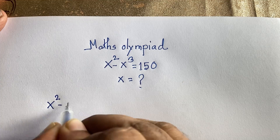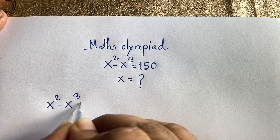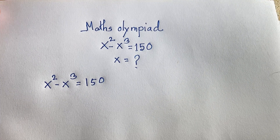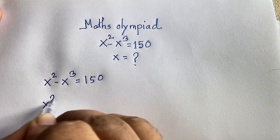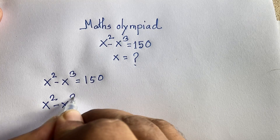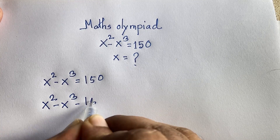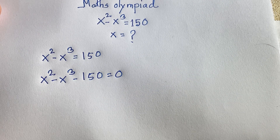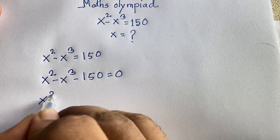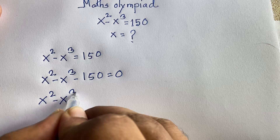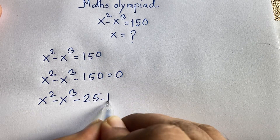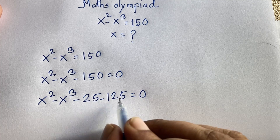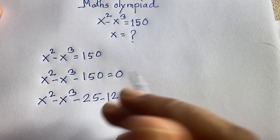Our question is x squared minus x cubed is equal to 150. I can rewrite this as x squared minus x cubed minus 150 is equal to 0. Now I can split 150 as 25 plus 125, so: x squared minus x cubed minus 25 minus 125 is equal to 0. Note that 25 minus 125 equals minus 150.